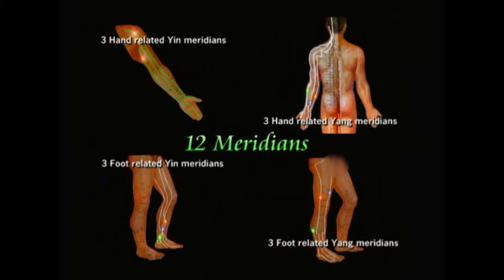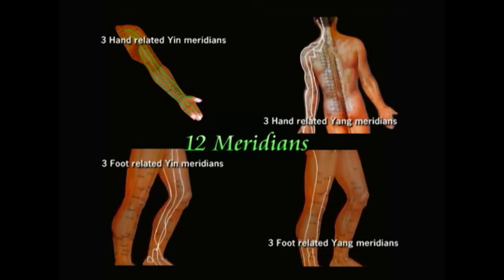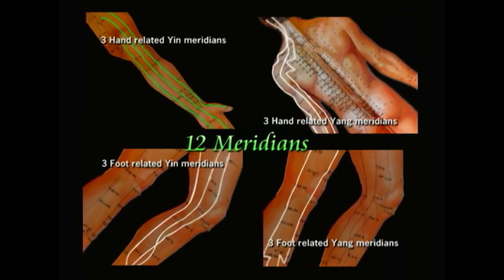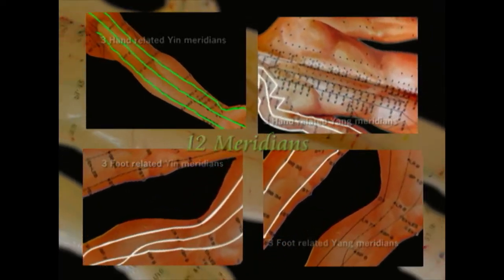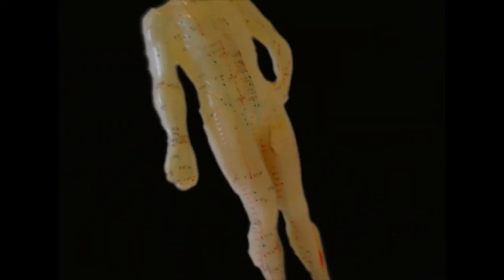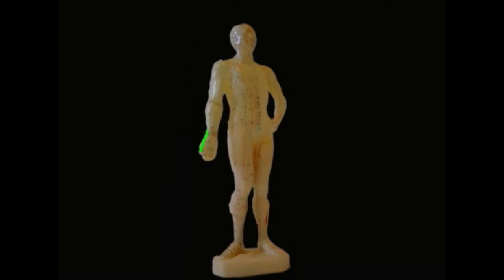As you may already know, the 12 meridians can be divided into 6 yin meridians and 6 yang meridians. Those connected with the yin organs are called the yin meridians, and those connected with the yang organs are called the yang meridians. Since all 12 meridians run through our limbs and are connected either with the tips of the toes or the tips of the fingers,